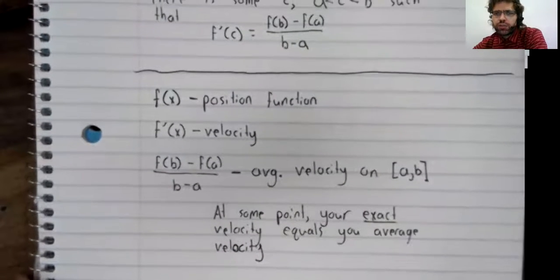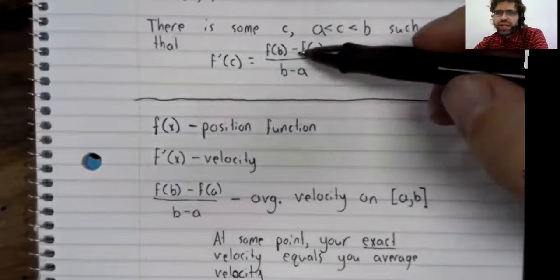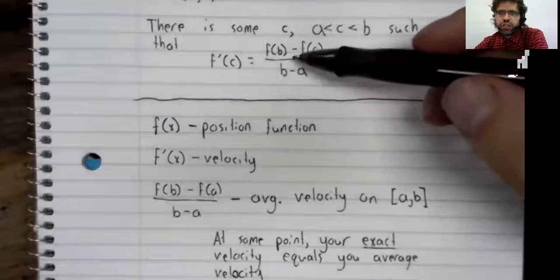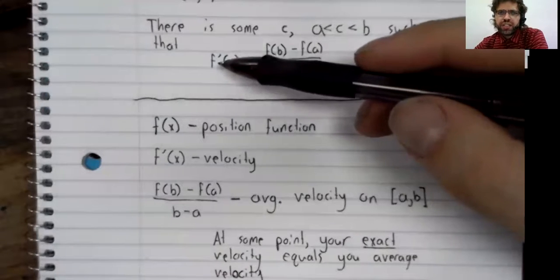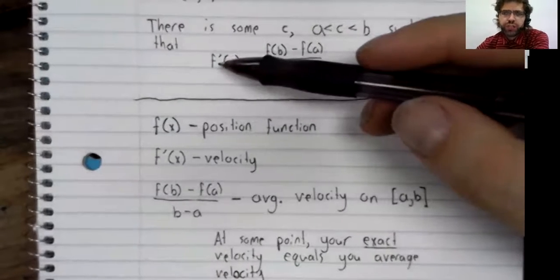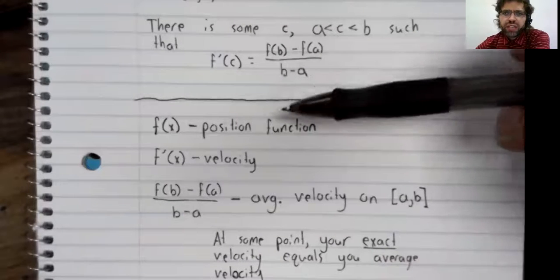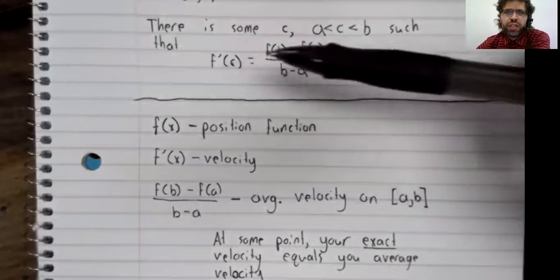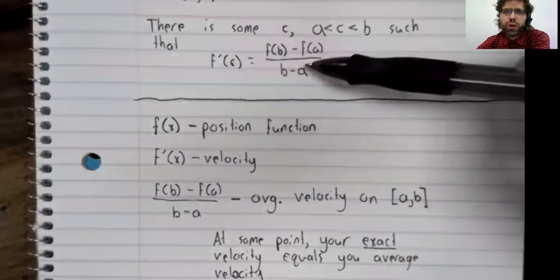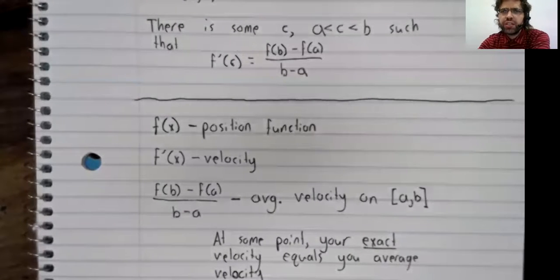And in general, this is an average rate of change. A derivative is an instantaneous rate of change. All this is saying is that at some point, your rate of change equals your average rate of change.